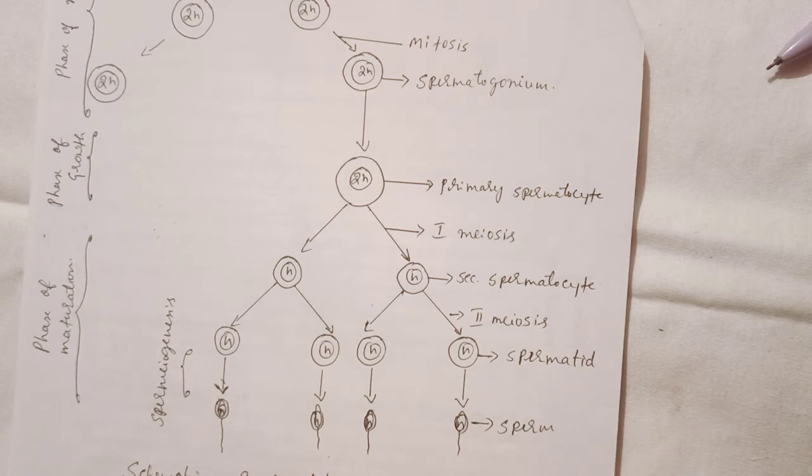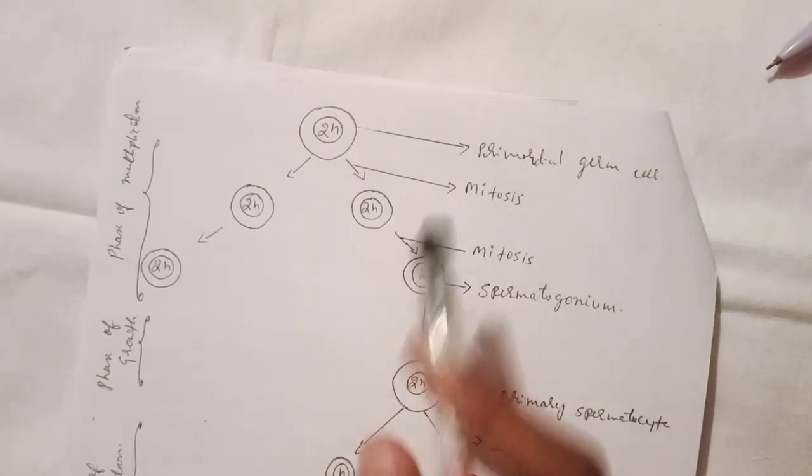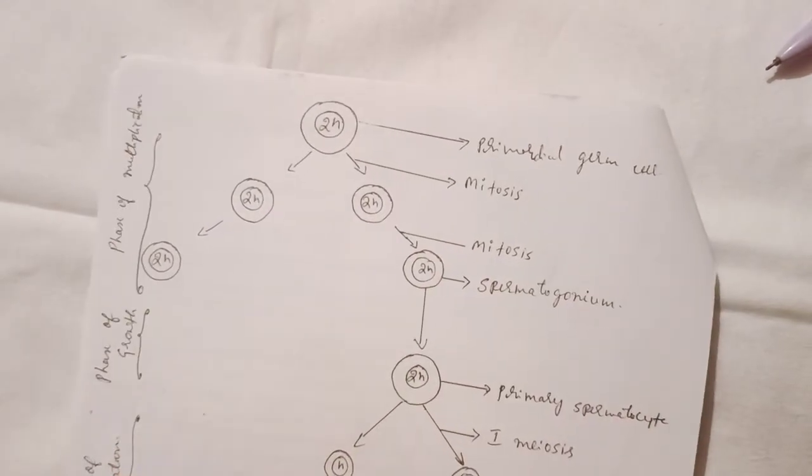This is called spermatogenesis. The stage from diploid to diploid is called the phase of multiplication.